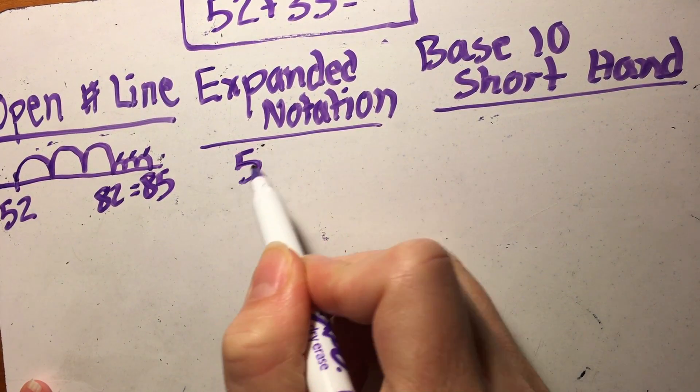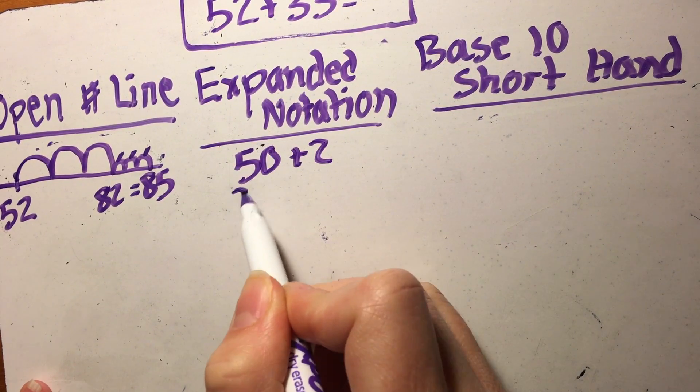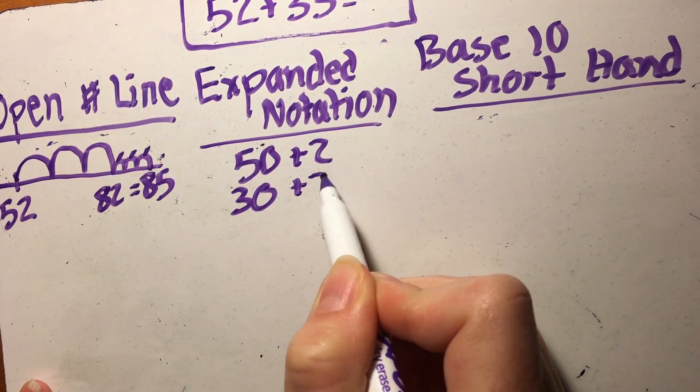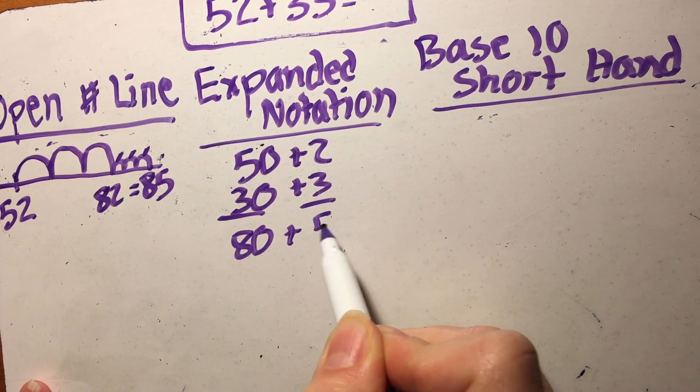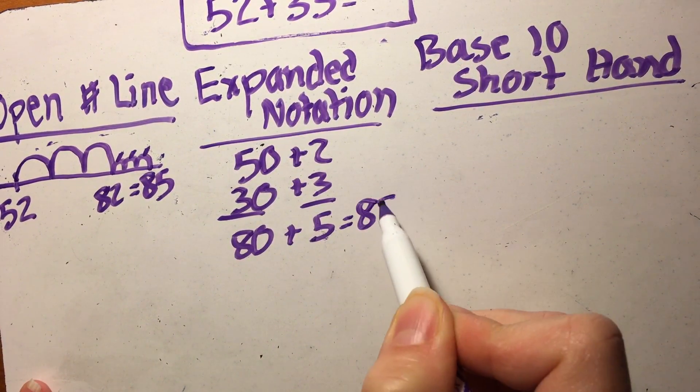In expanded notation it will look like 50 plus 2 is 52 and 30 plus 3 is 33. 50 plus 30 is 80, plus 2 plus 3 is 5. So my answer therefore is 85.